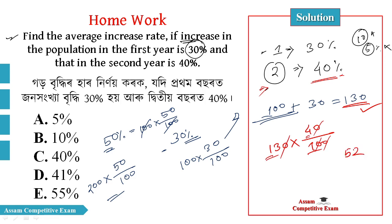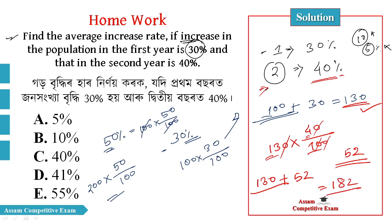The result is 52. So, the second year was 40% increase and the first year was 30% increase. That gives a 52% increase. 130 plus 52 is 182, so it was 182.